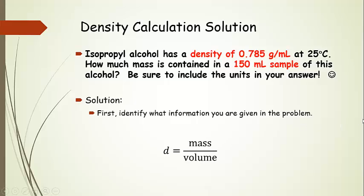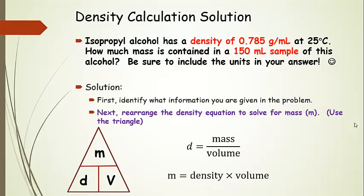Now this one we can actually use our handy dandy little triangle. So we have density and volume and we want the mass. So mass is equal to density times volume.